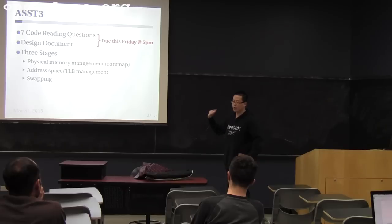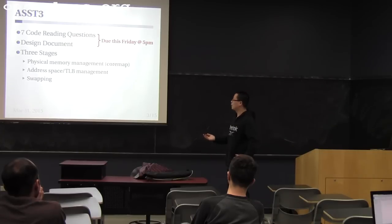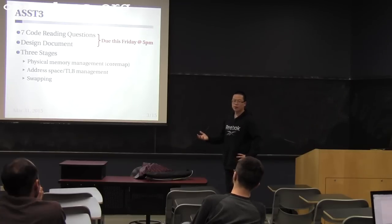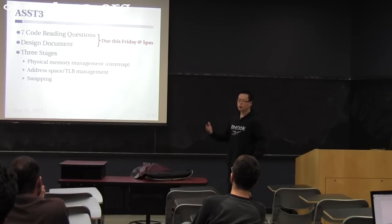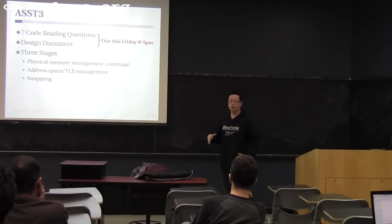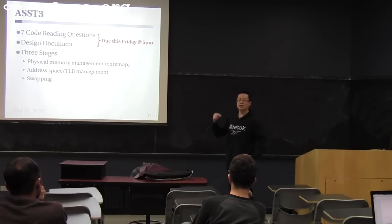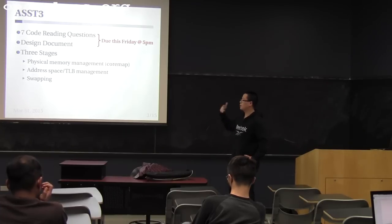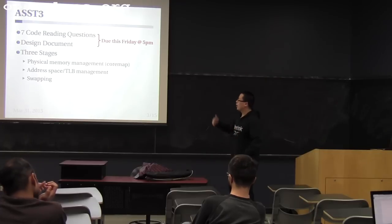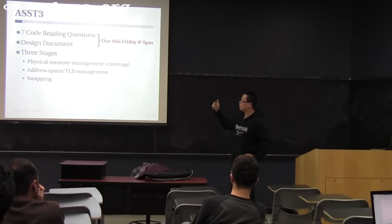In the second stage, you can assume you have enough memory. When you want to allocate a physical page, use the function you implemented in the first stage — you can assume you will always get a physical page. Finally, in the third stage, you shrink the memory size and can no longer assume every allocation succeeds. When there are no free physical pages available, you need to swap a physical page out to disk, and later when a user program accesses it, swap it back in.